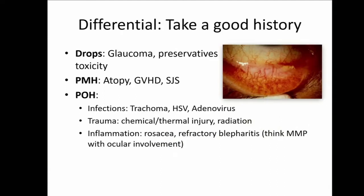However, we still try. With the differential, it's important to take a good history. Preservatives and glaucoma drops — you really want to eliminate those. Past medical history of atopic disease, graft versus host disease, Stevens-Johnson: these can all create cicatricial changes on the ocular surface. A history of infections, trauma, and inflammation — especially if there's a refractory blepharitis that's been treated on and on for many years — think mucous membrane pemphigoid with ocular involvement.